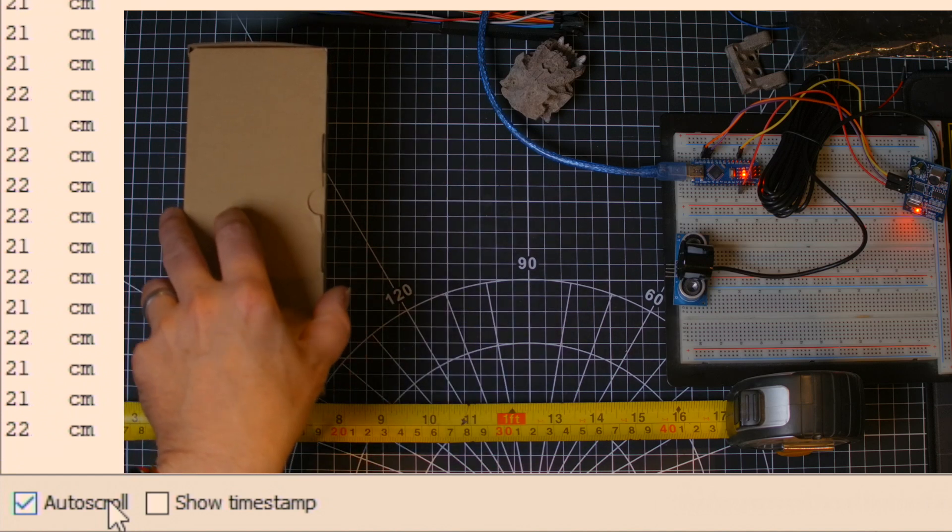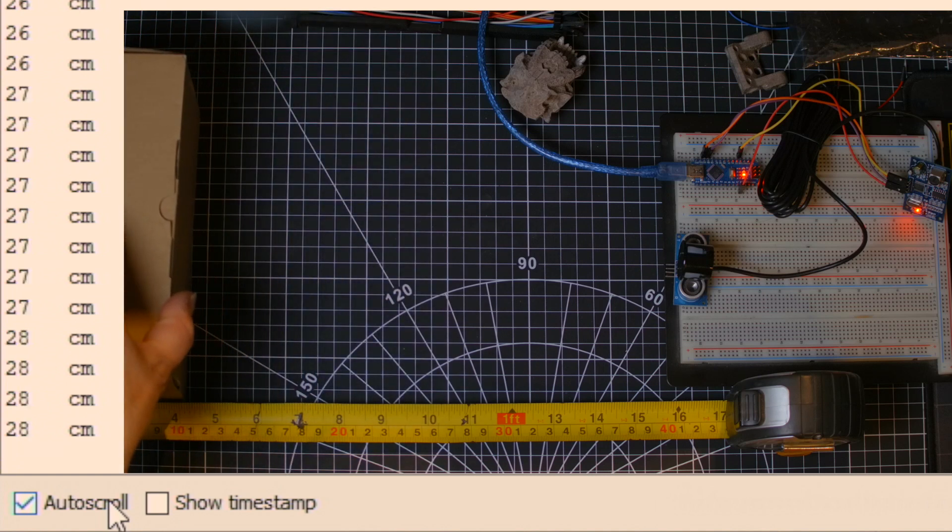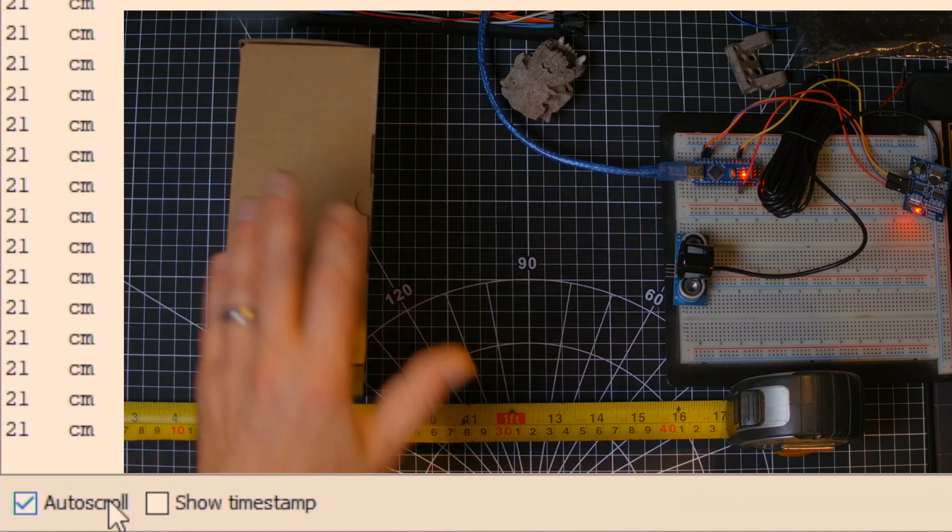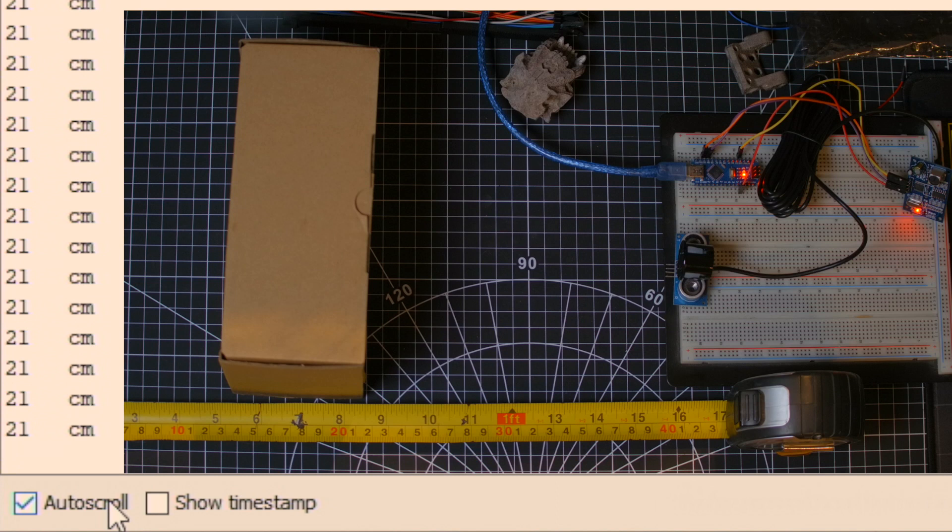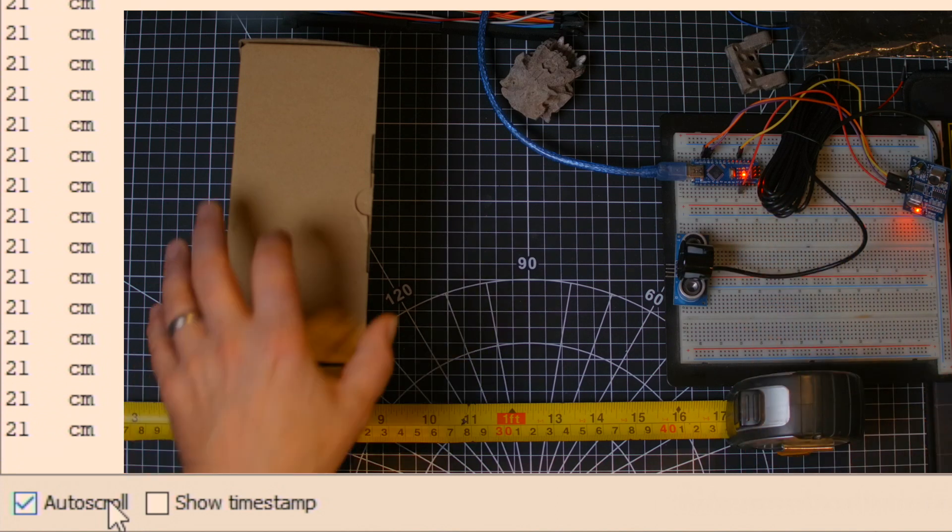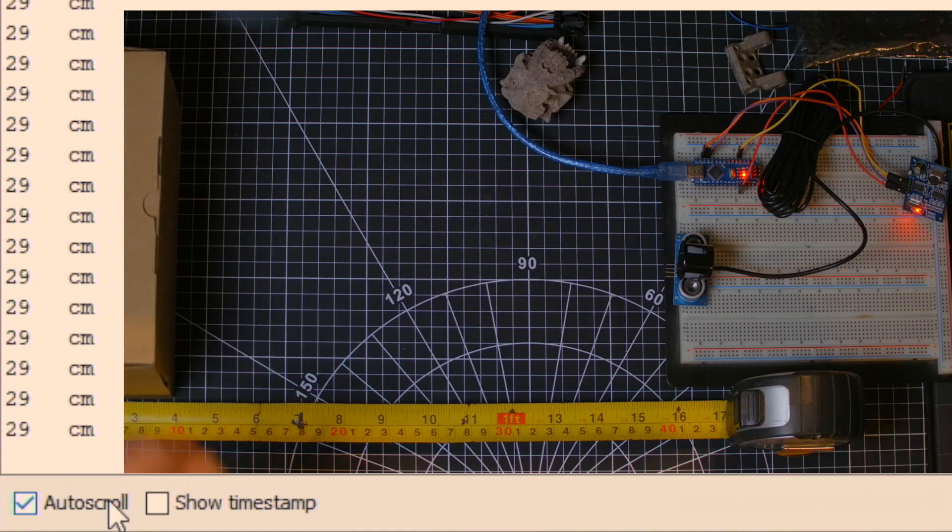And let me go all the way up to 20. And as you can see, it doesn't really go lower than 21, 22. And if I start going further then it starts going up. But if I go down, down, down, it doesn't really matter. It's kind of stuck at 21. So the maximum for this one that I have seems to be 21.